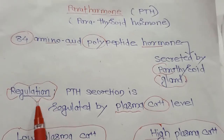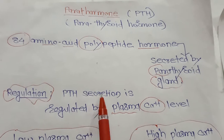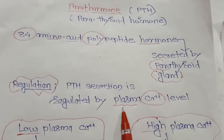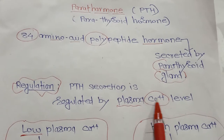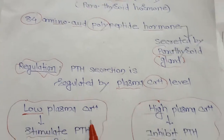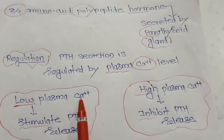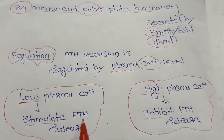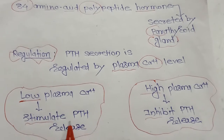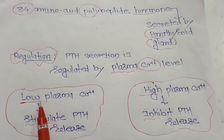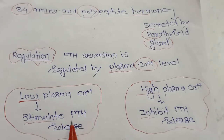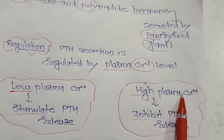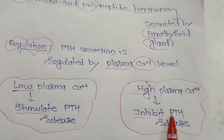Now, how is PTH regulated? Parathyroid hormone secretion is regulated by plasma calcium level. Whenever there is hypocalcemia, or low plasma calcium, it will stimulate PTH release. Conversely, whenever there is hypercalcemia, or high plasma calcium, it will inhibit PTH release.